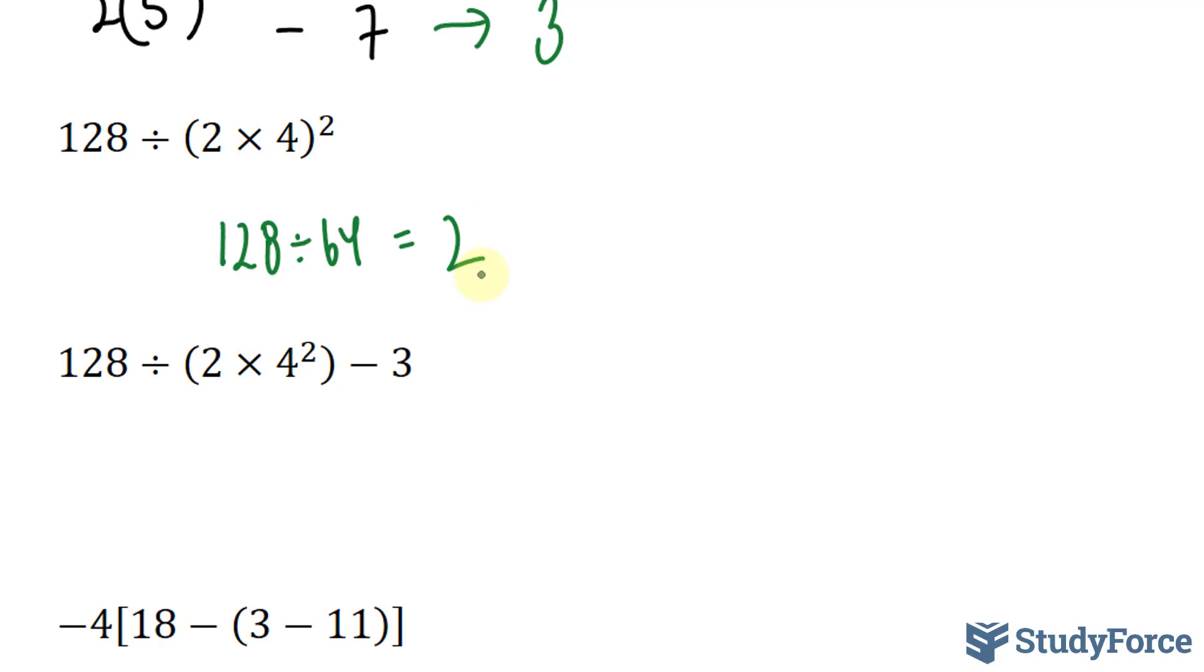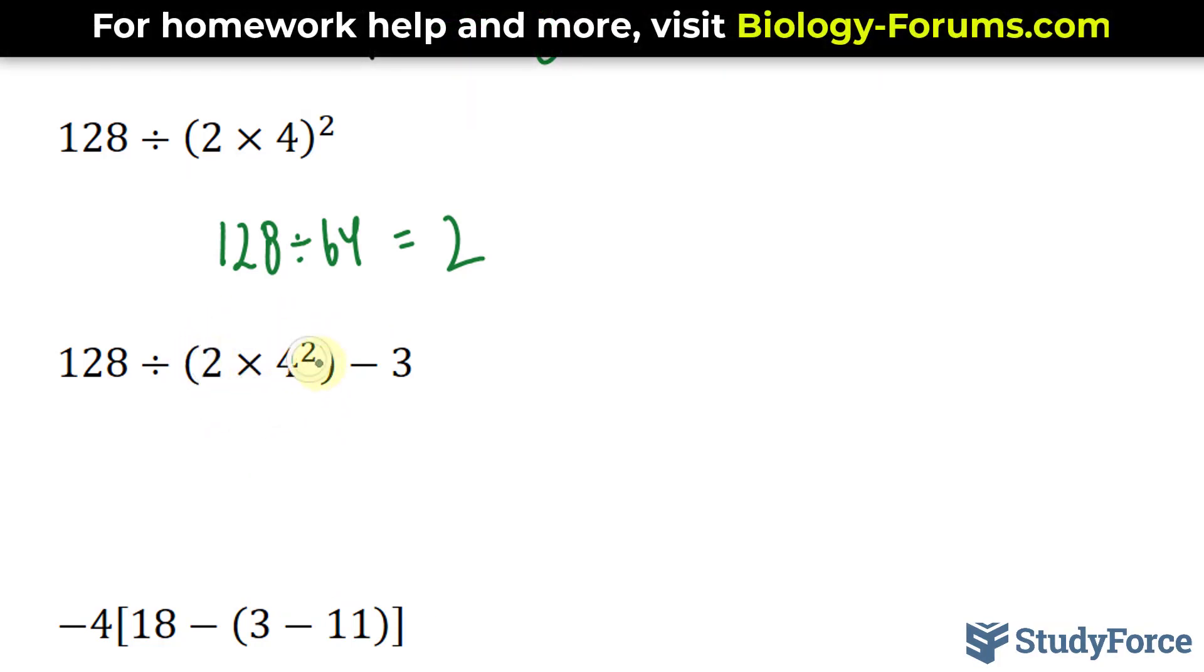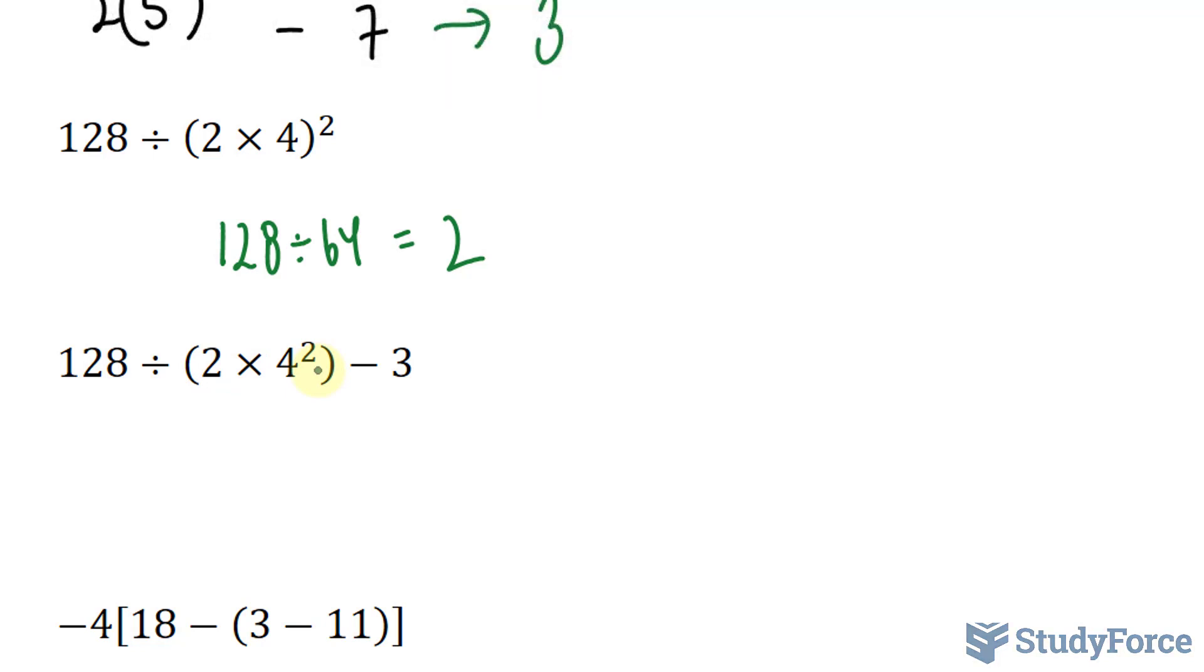The example right below is nearly identical, except this time we have a 4 being raised to the power of 2, and a minus 3 added to the end. So instead of multiplying 2 and 4 together, we're going to take 4 and raise it to the power of 2, that's 16. 16 times 2 is 32. 128 divided by 32 is 4 minus 3 is equal to 1.